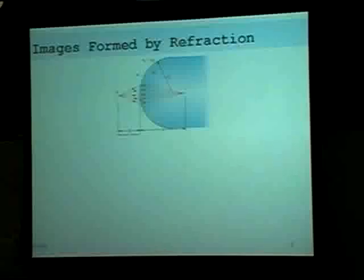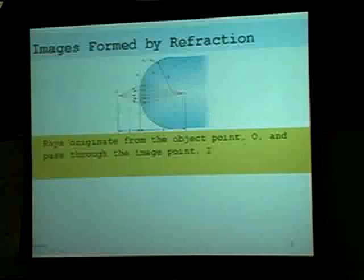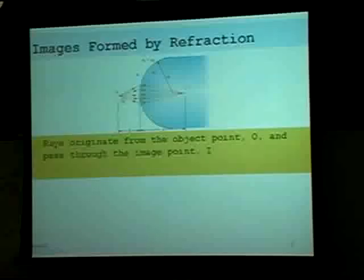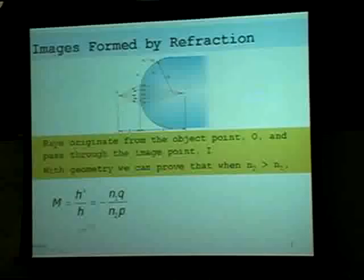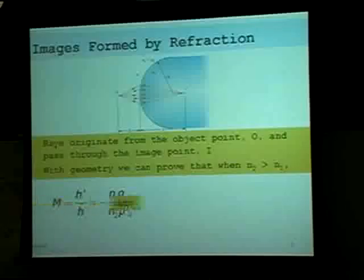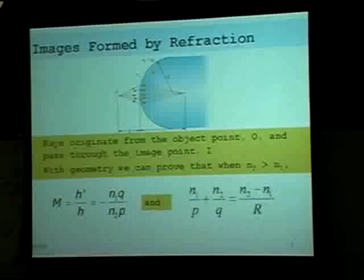Images formed by refraction. Consider a material like glass with a higher index of refraction than air — an object from outside refracts and converges to form an image. The magnification equals the image height over the object height, which equals negative n1 times image distance over n2 times object distance. And: n1 over object distance plus n2 over image distance equals n2 minus n1 over the radius of curvature of the interface.